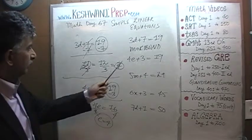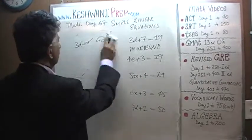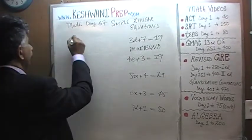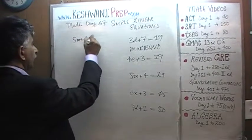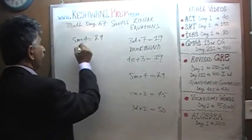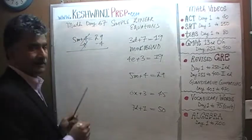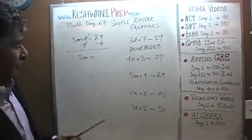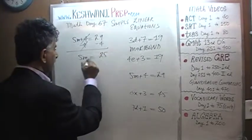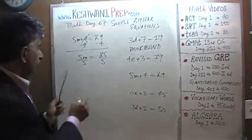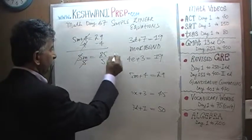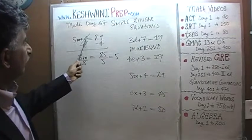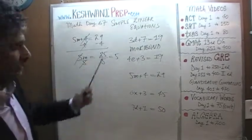Let's keep on going. Number 8: 5m plus 4 equals 29. Subtract 4 from both sides — 4 gets cancelled out. 5m comes down. 29 minus 4 is going to be 25. Divide both sides of the equation by 5 — 5 gets knocked out and m equals 25 over 5, which is 5. Put it back: 5 times 5 is 25, and 25 plus 4 is 29 — that's exactly what we have there.